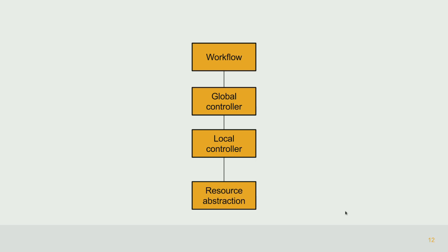If you look at how config management systems are put together — definitely Puppet, Chef, Ansible — they're put together with four big functional areas. The first is concerned with workflow: the code you write for your config management tool, where you establish the inventory of machines and their classification. Then there's something like a global controller that figures out for each system what needs to be done. Then there's a local controller that does something on the system to enforce whatever changes you want to make. And those local controllers sit on a resource abstraction layer, so up at the top you're dealing with abstractions of users or packages, not usermod and useradd.